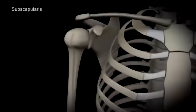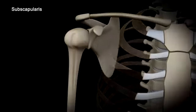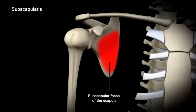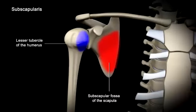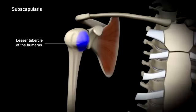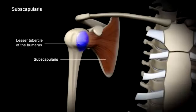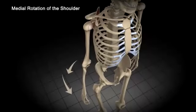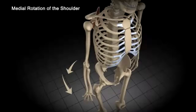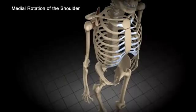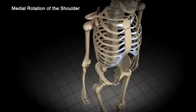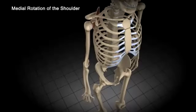Another rotator cuff muscle, the subscapularis, originates on the subscapular fossa of the scapula and inserts on the lesser tubercle of the humerus. Along with several other muscles — including the pectoralis major, deltoid, latissimus dorsi, and teres major — the subscapularis provides the movement of medial rotation of the shoulder.